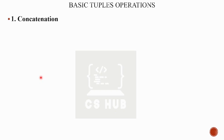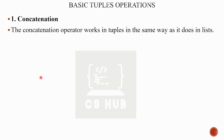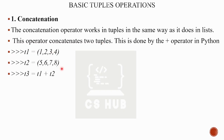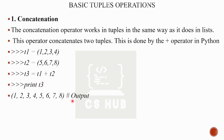As usual, concatenation. The concatenation operator works on tuples the same way it does for lists — by using the plus operator. For example, t1 = (1, 2, 3, 4) and t2 = (5, 6, 7, 8). We create t3 = t1 + t2, and t3 prints (1, 2, 3, 4, 5, 6, 7, 8). Very easy.